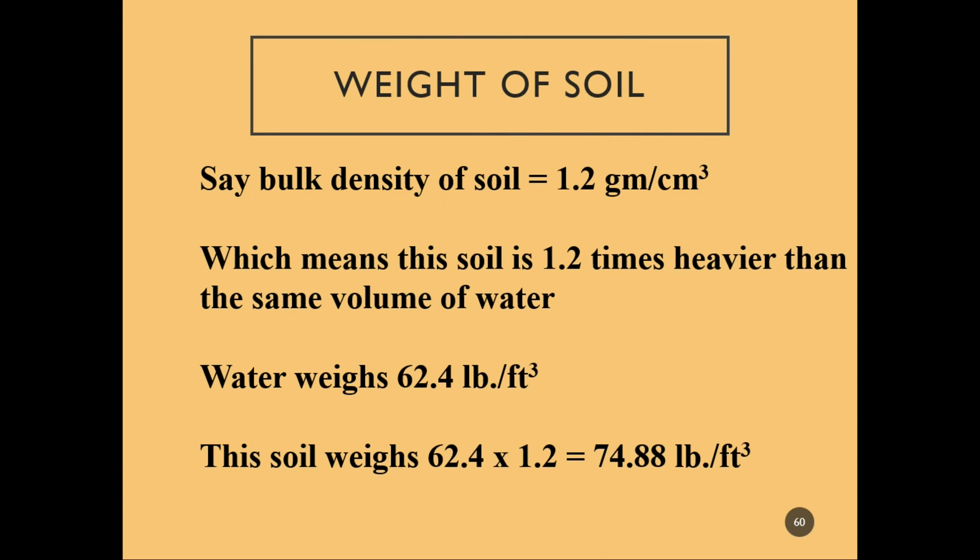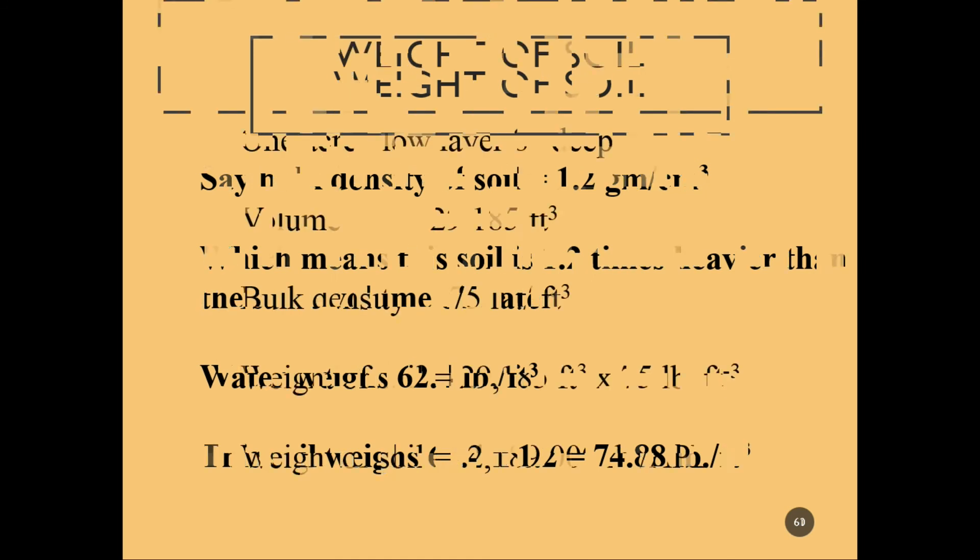With an estimated bulk density of 1.2, the soil is 1.2 times heavier than the same volume of water. Water weighs 62.4 pounds per cubic foot, so soil weighs 62.4 times 1.2 — the soil in an acre of land 8 inches deep weighs about 75 pounds per cubic foot.